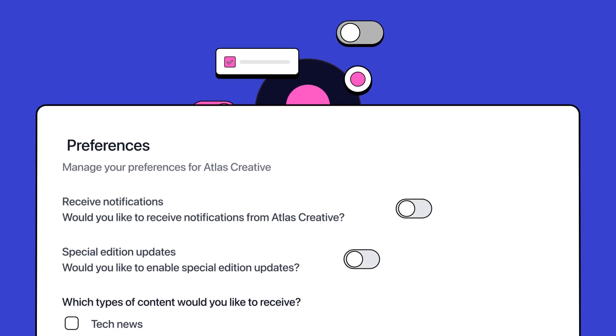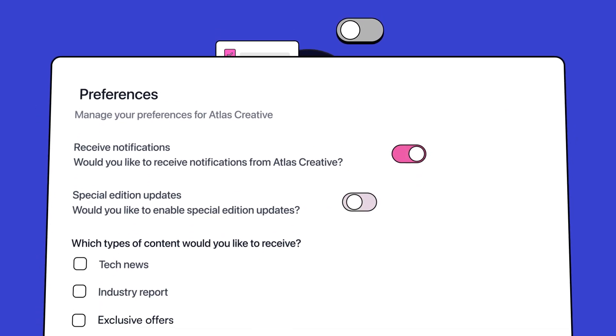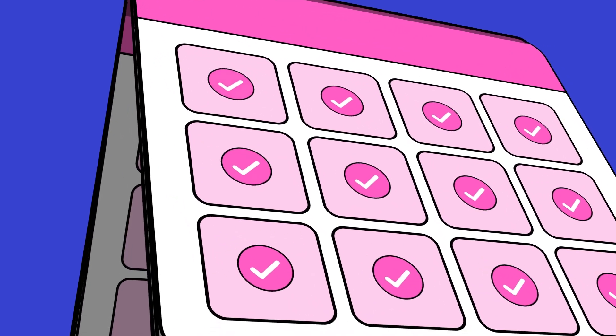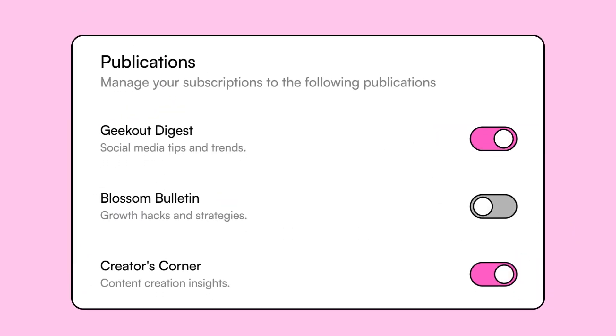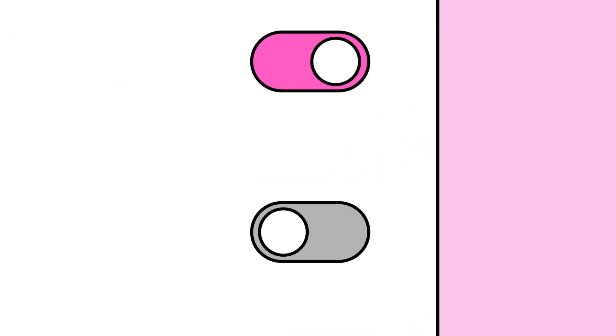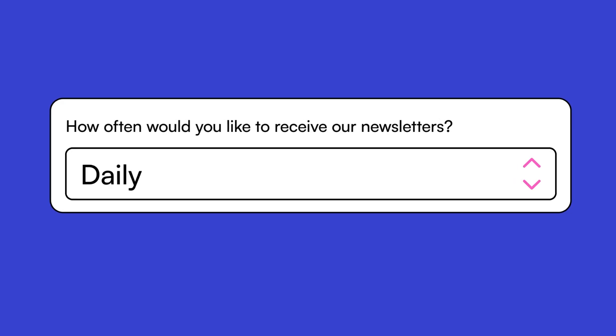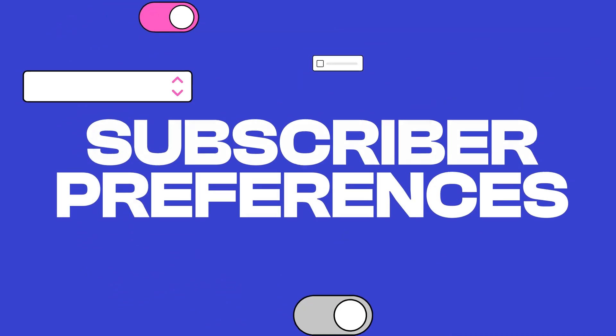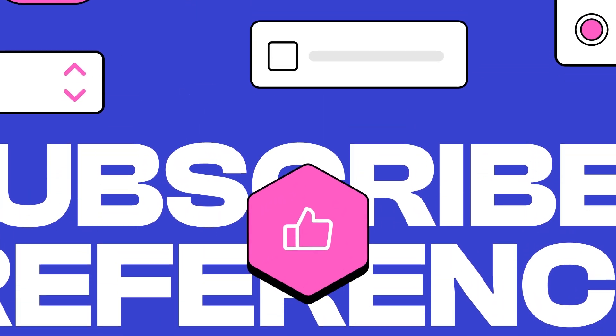Subscriber preferences allow your readers to choose and update what types of emails they want to receive. For example, if you host events, you can have readers opt in to receive emails specifically about upcoming events. If you have multiple newsletters, readers can easily browse and select which ones they want to receive. Or if you send a daily newsletter, you can allow users to choose how frequently they want to receive emails. Those are just some examples of preferences you might want to create.